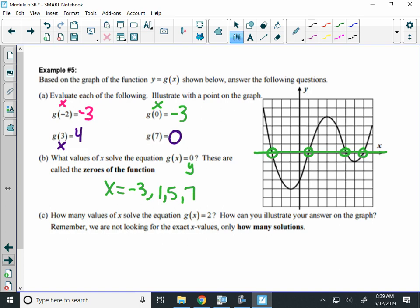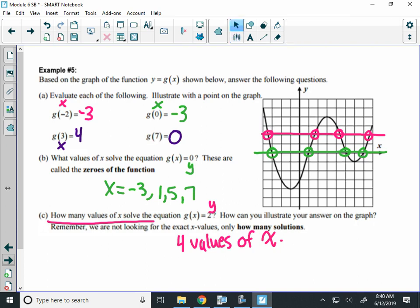Last question says, for how many values of X? So, they don't want to know what the values of X are, just how many times do you have Y equal to 2? So, I draw a line at 2. And I'm going to count 1, 2, 3, 4 times. So, for 4 values of X. And that's it. So, try some of the function practice on the back of this page.